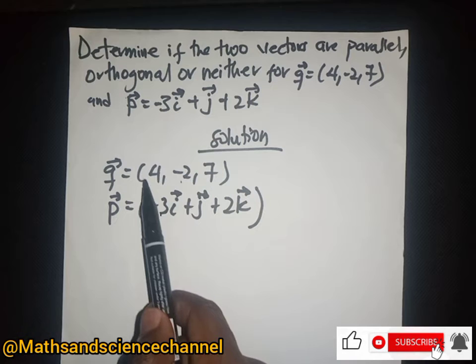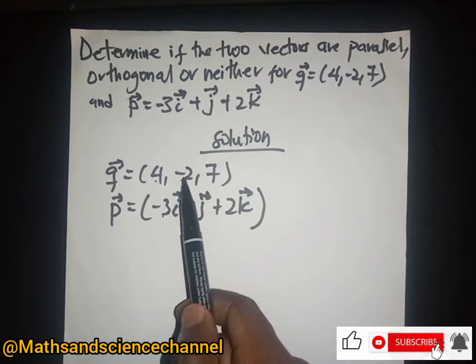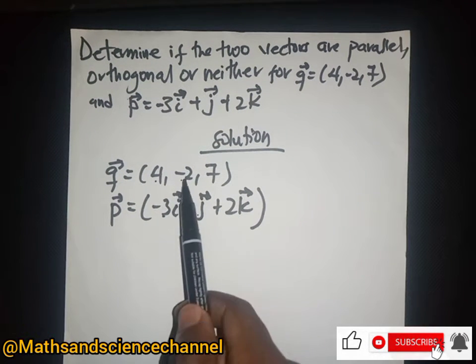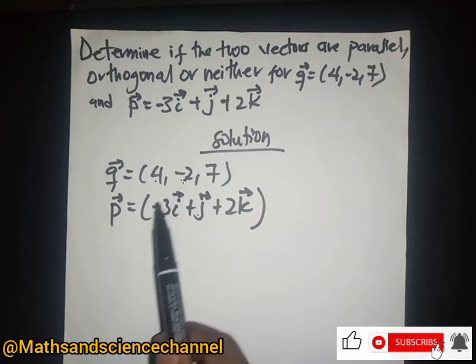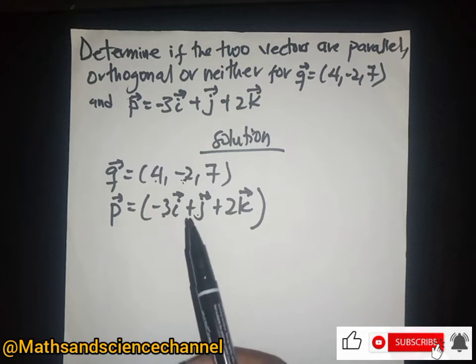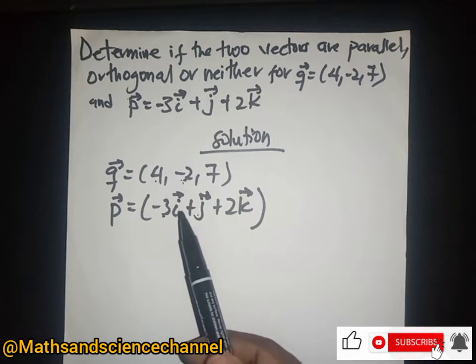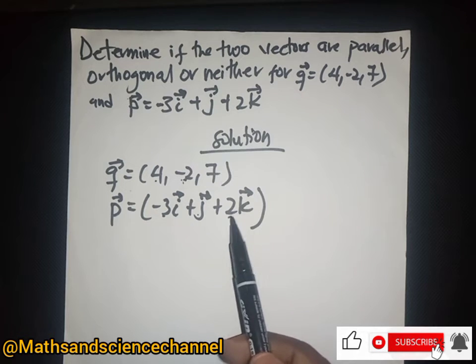The two vectors have opposite signs, and the third component doesn't have that pattern. The sign here is positive and is positive here as well.